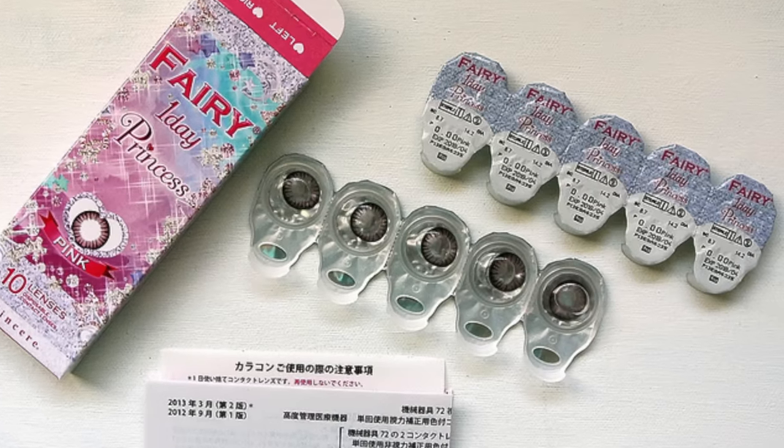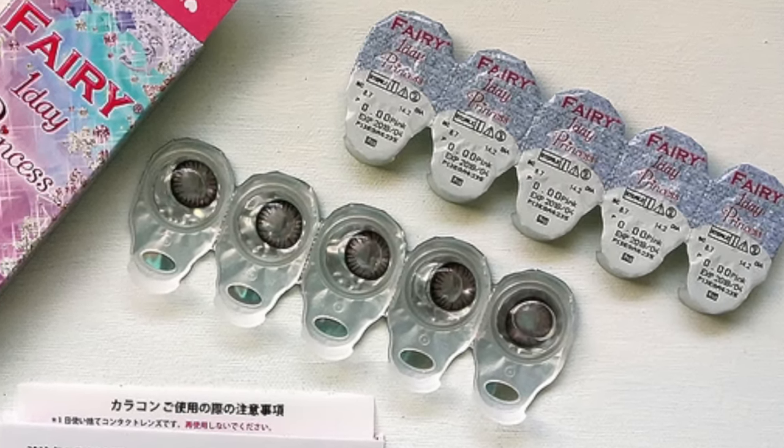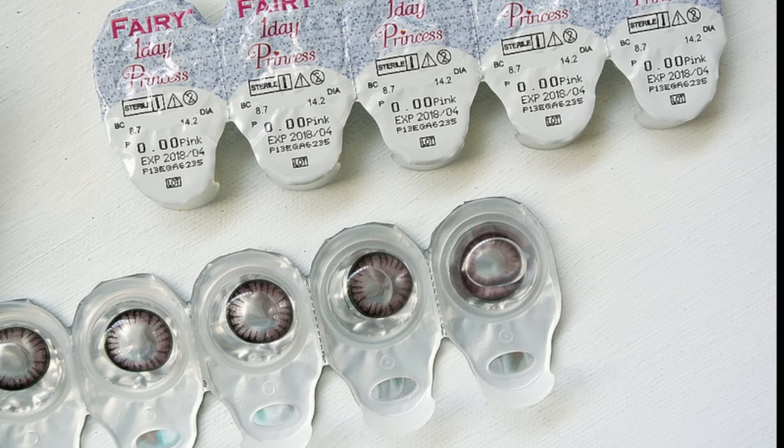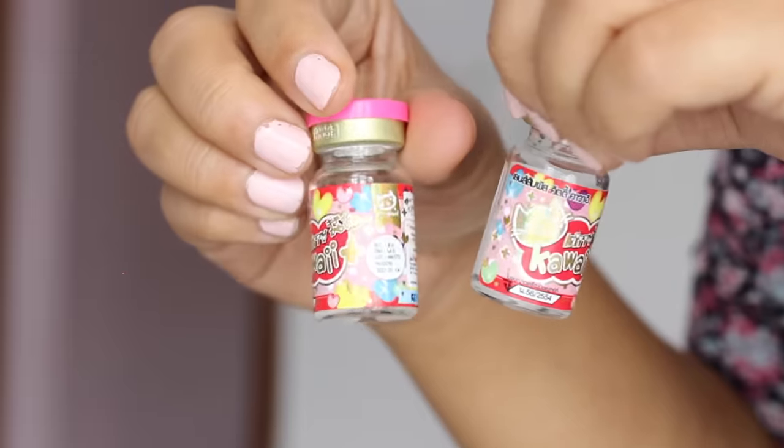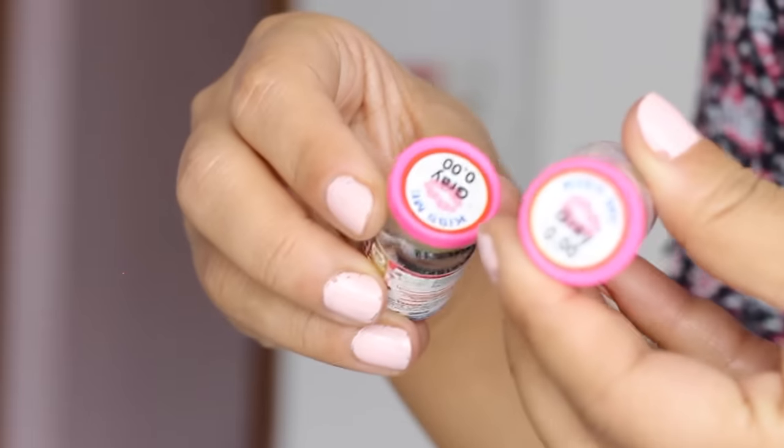First of all, you want to know that contact lenses come in two different types of packaging. One looks like this, it's a very simple plastic packaging and it's very easy to open. You just need to peel the top cover and get to using your lenses.